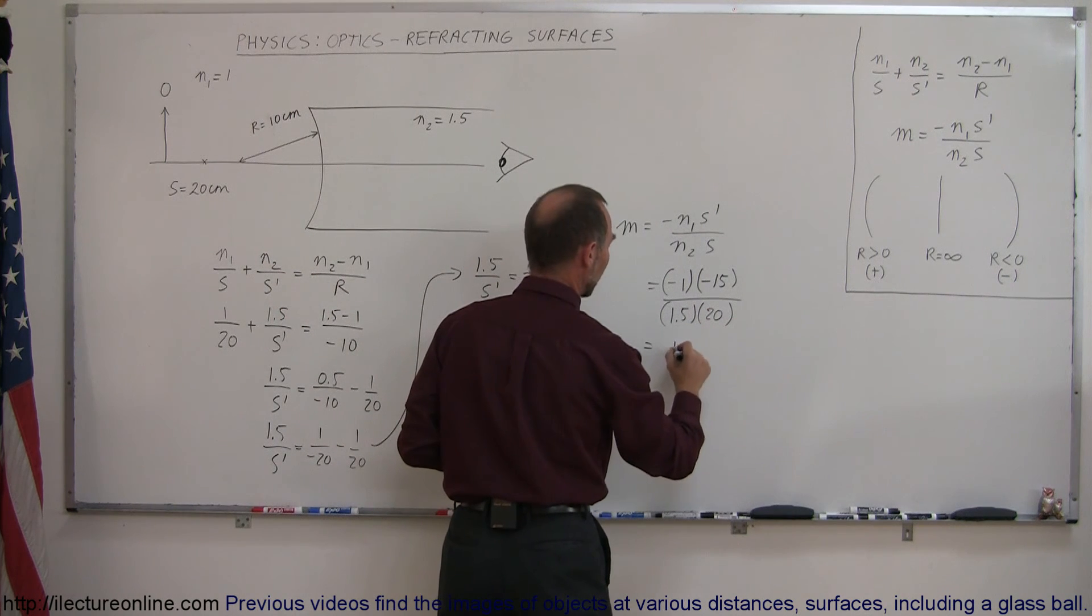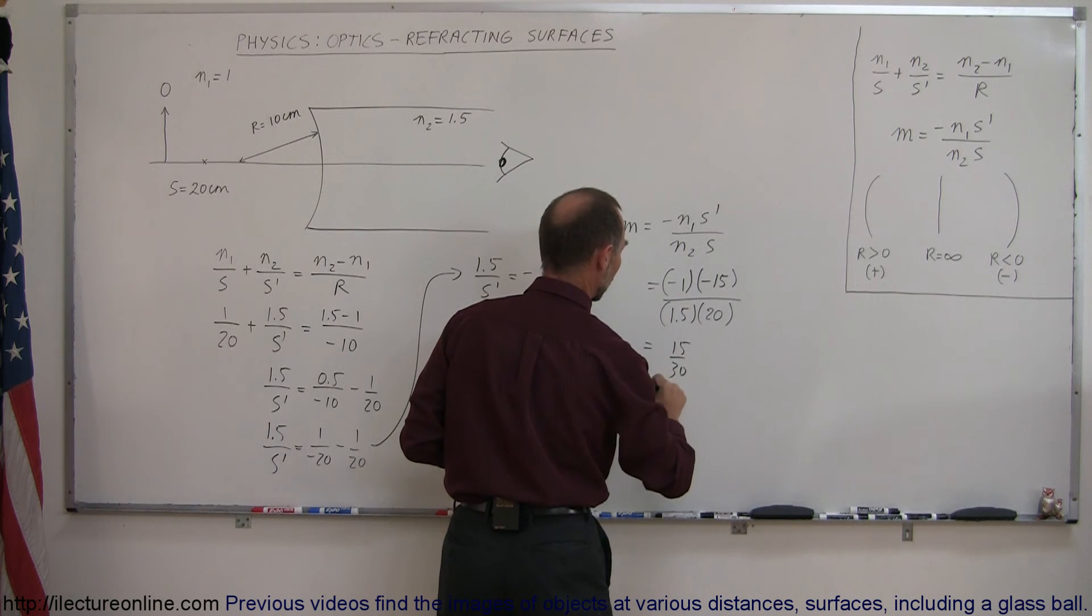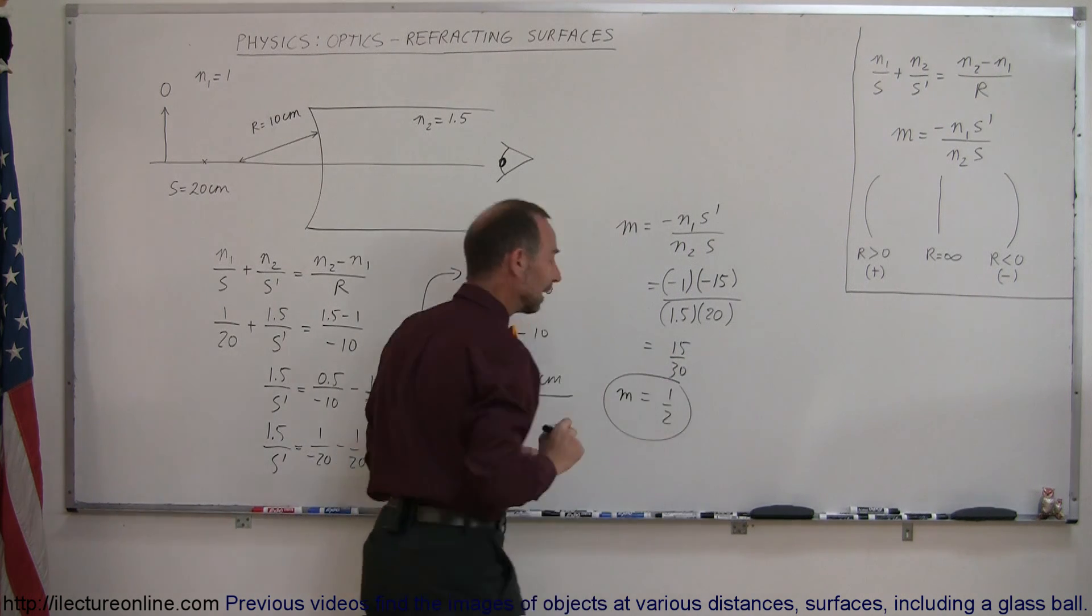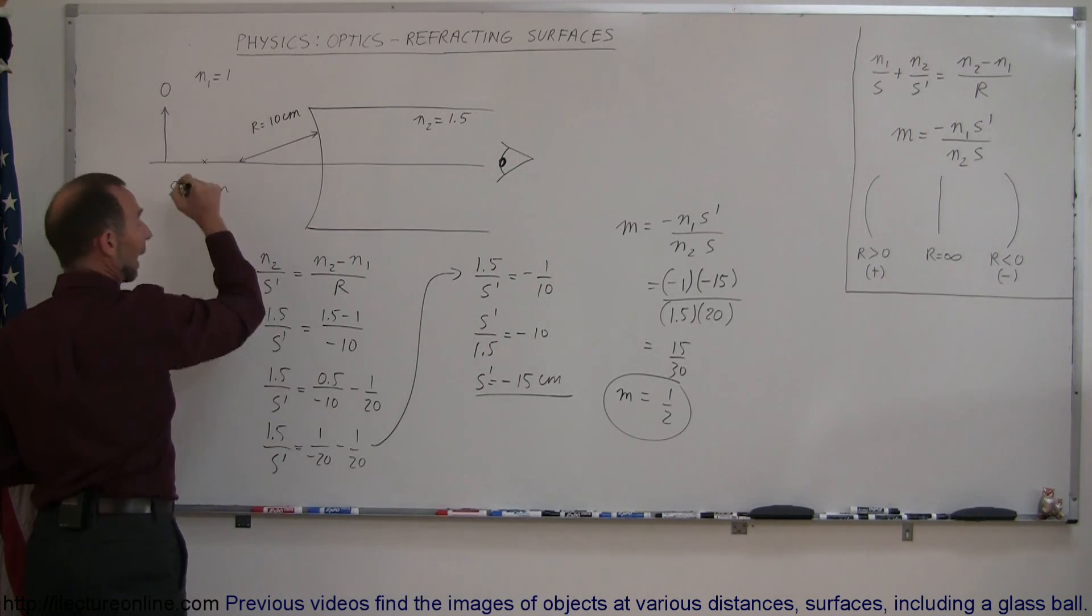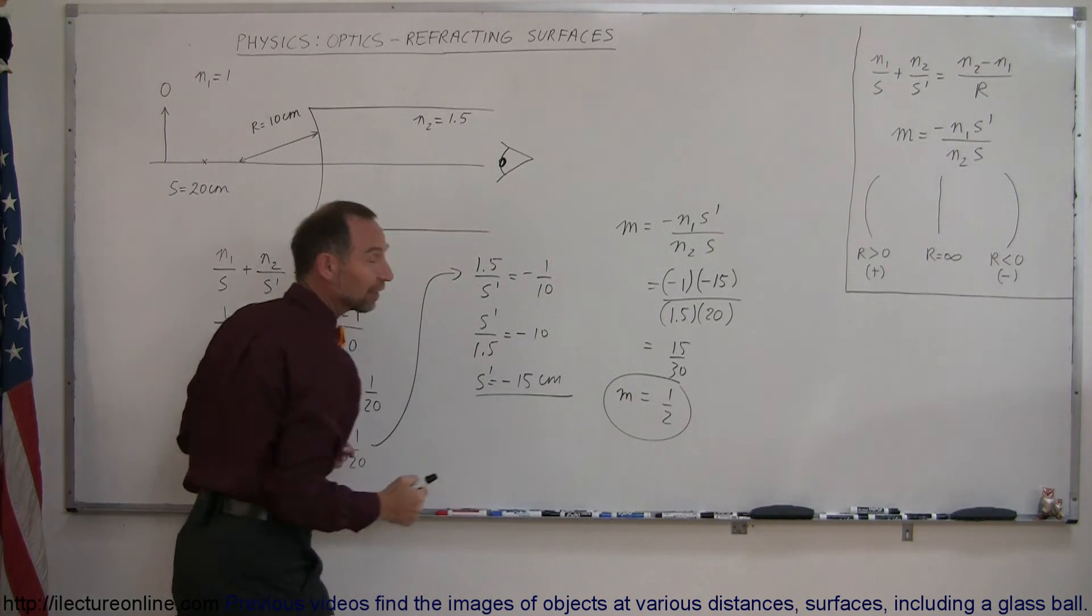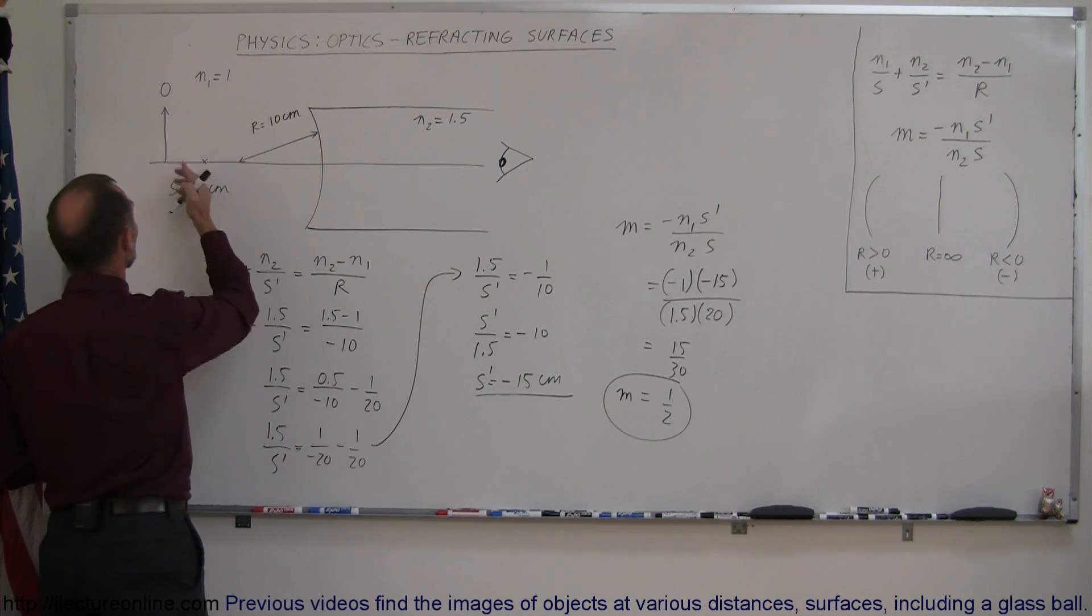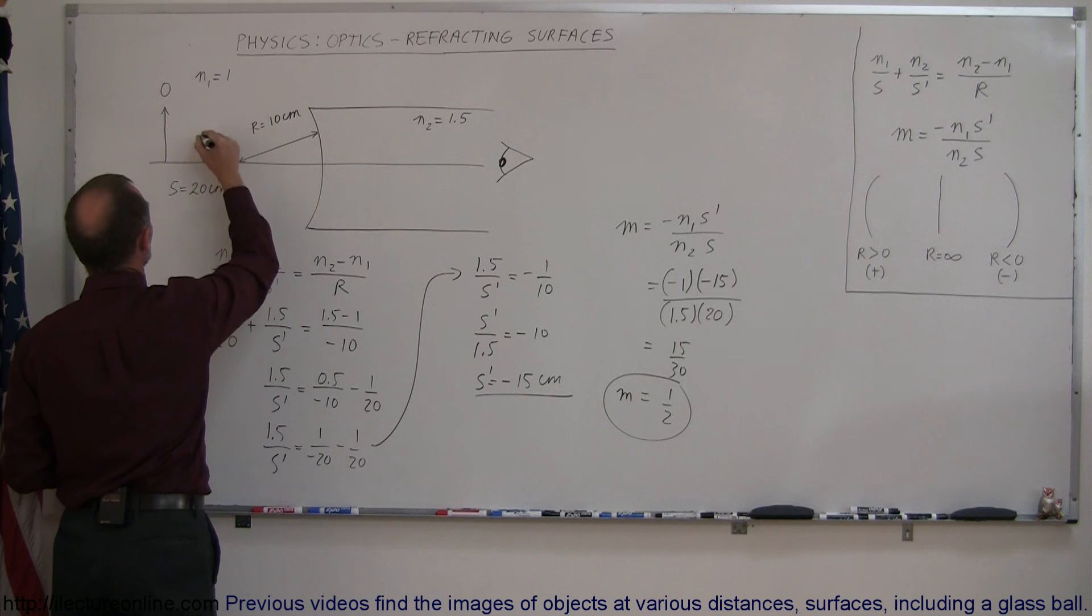So this becomes equal to positive 15 over 30, which is one half. That means the magnification of the image is half the size of the object, and since it's a positive magnification, that means the image is upright or in the same direction as the object, and so we can place it right here.